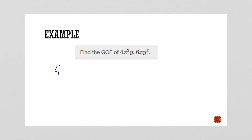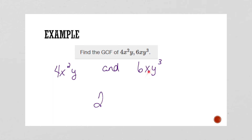Find the GCF of 4x²y and 6xy³. Look at the numbers first — the biggest number I can pull out of 4 and 6 is 2. Check out your x's: I've got two here and only one here, so I can only pull one out. Check out your y's: I've got one here but three here, so I can't pull three out. Our GCF is 2xy.